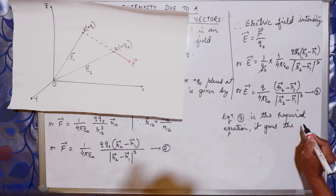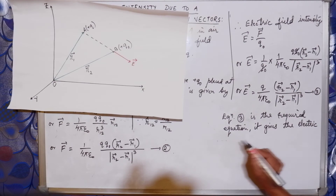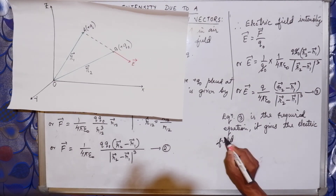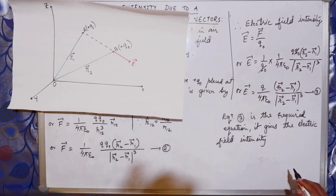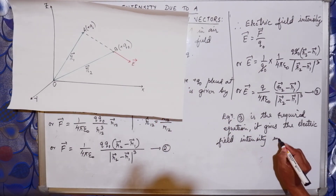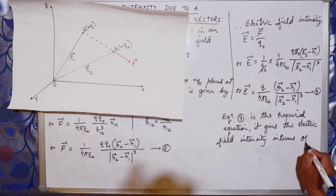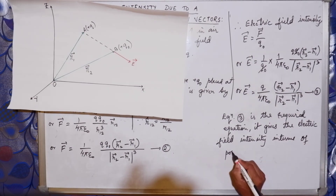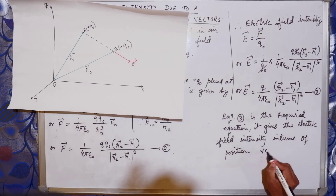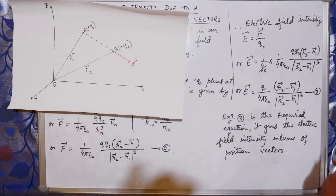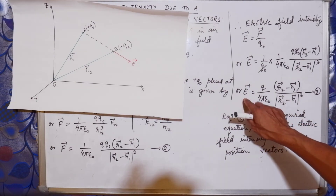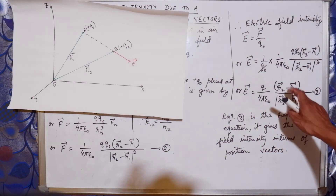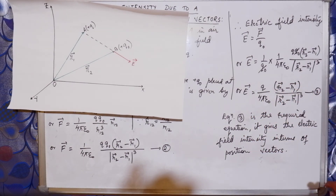Equation 3 is the required equation. It gives the electric field intensity at point B in terms of position vectors R2 and R1. With this we complete the topic today. Thank you.